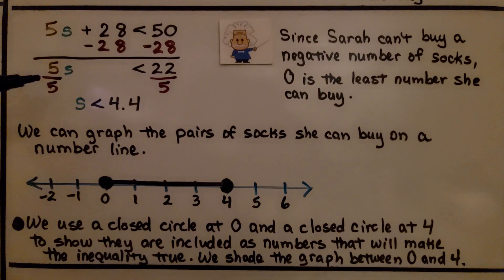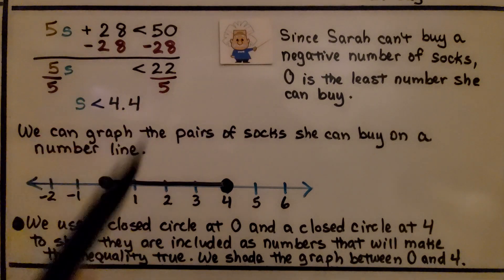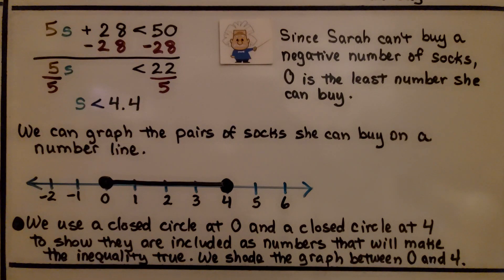We know the amount of pairs of socks she can buy is less than 4 and 4 tenths. And since Sarah can't buy a negative number of socks, 0 is the least number she could buy.